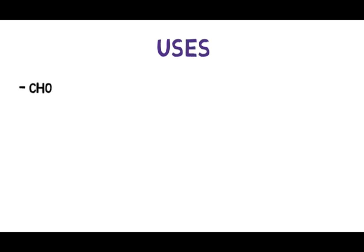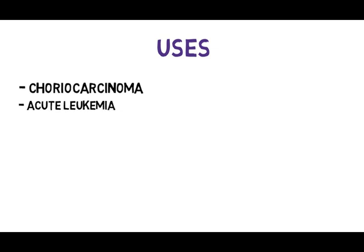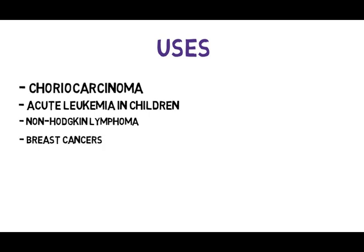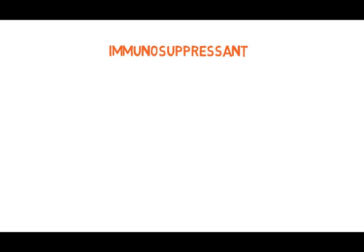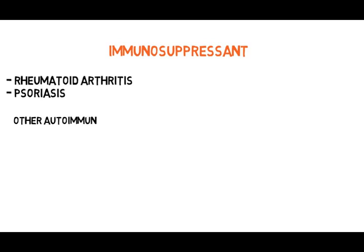The important uses of Methotrexate include treatment of choriocarcinoma, acute leukemia in children to maintain remission, non-Hodgkin lymphoma, breast cancers, bladder cancers, and various head and neck cancers. Apart from that, Methotrexate also has immunosuppressant properties that make it suitable for use in conditions such as rheumatoid arthritis, psoriasis, and various other autoimmune disorders.